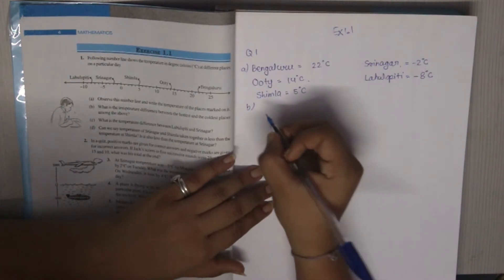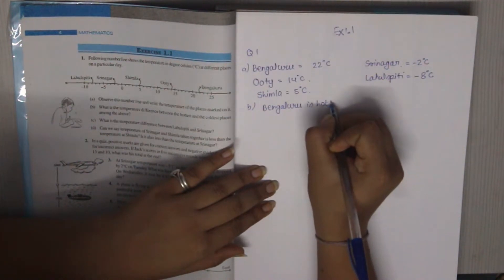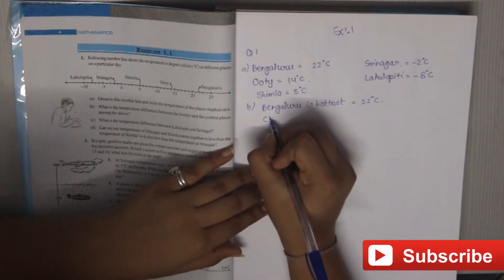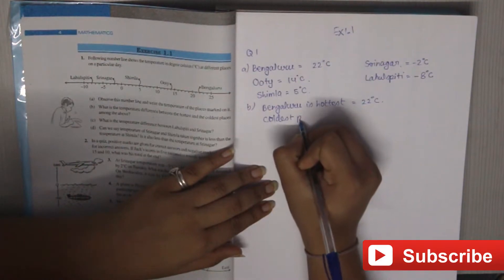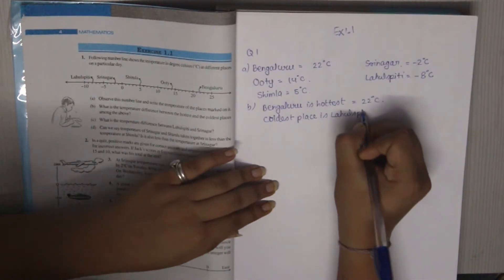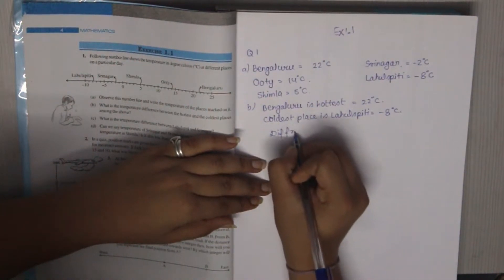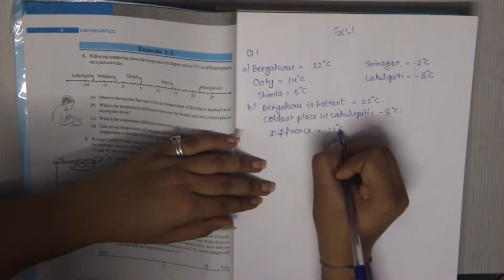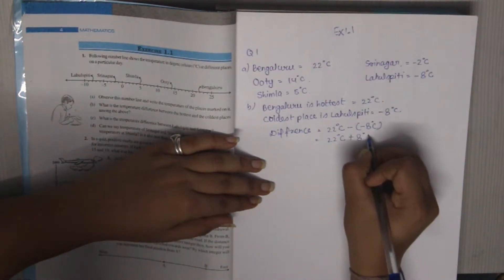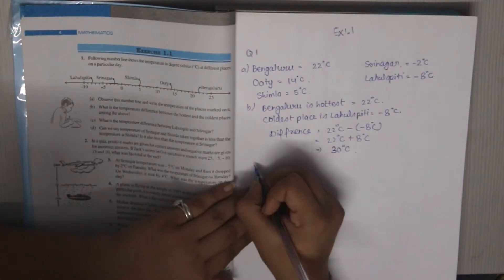For part B: What is the temperature difference between the hottest and the coldest place among the above? The hottest place is Bengaluru at 22 degree Celsius, and the coldest place is Lahul Spiti at minus 8 degree Celsius. The difference is 22 minus (minus 8) degree Celsius. Negative and negative gives positive, so the difference is 30 degree Celsius.